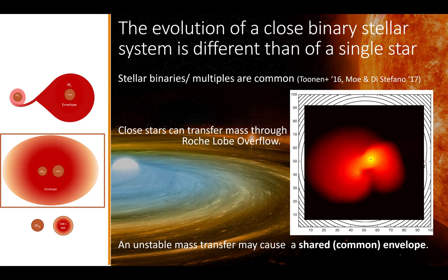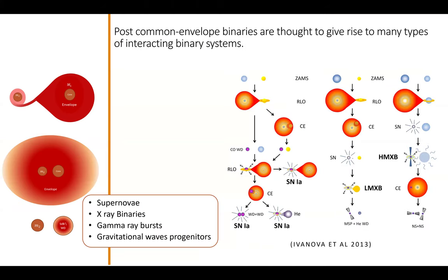This envelope covers both components — the two cores, or the core of the giant and the compact object — which then spirals in due to dynamical friction from the gas, deeper and deeper inside the envelope. The envelope expands in order to conserve the angular momentum lost from the orbit. We believe the common envelope phase has an important role in the evolution of many binary and multiple systems.